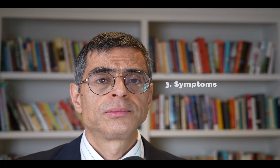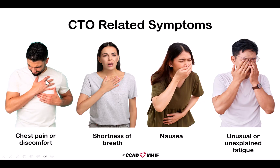Question number three: what are the symptoms caused by the CTO? The most common symptoms are chest pain or discomfort and shortness of breath. The chest pain can radiate to the left arm, feel like pressure, go to the back, sometimes go to the neck, and usually happens with exertion. Chest pain caused by blockages in the arteries of the heart is called angina. Shortness of breath is also very common and happens with exertion, but there are other less common symptoms such as fatigue, low energy, and nausea. Those symptoms often develop gradually, so many people subconsciously decrease their activity level so that they do not develop the symptoms.